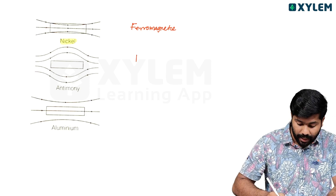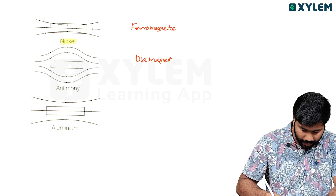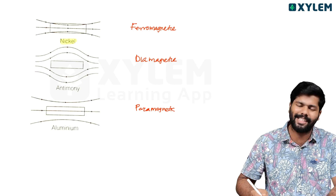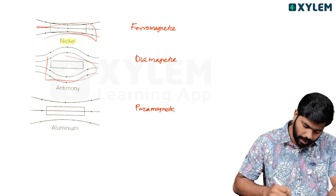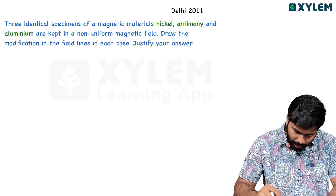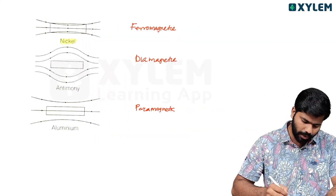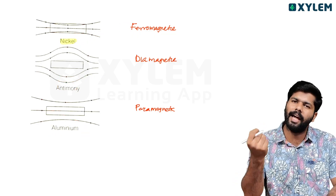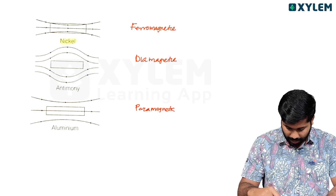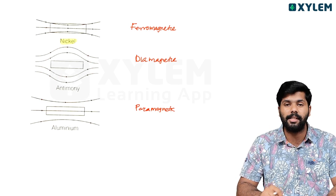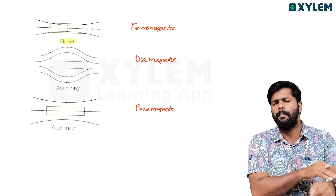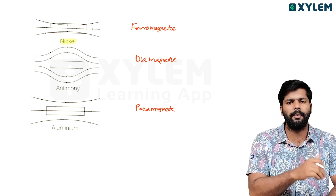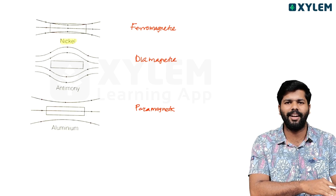Antimony is diamagnetic and aluminium is paramagnetic. The answer should be justified: nickel is ferromagnetic, antimony is diamagnetic, and aluminium is paramagnetic — that is why they behave differently. This covers all the previous year questions and the most important topic in this chapter: the table and classification of magnetic materials. See you later, bye!